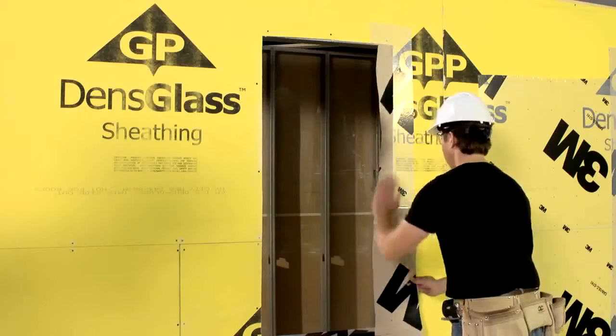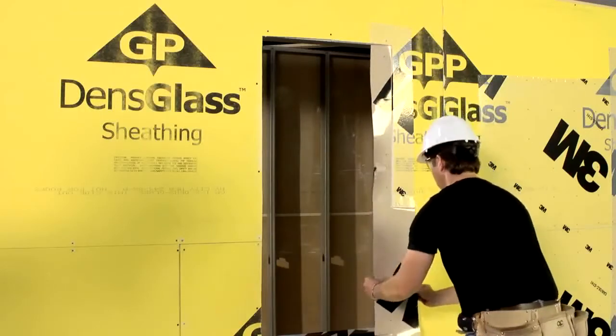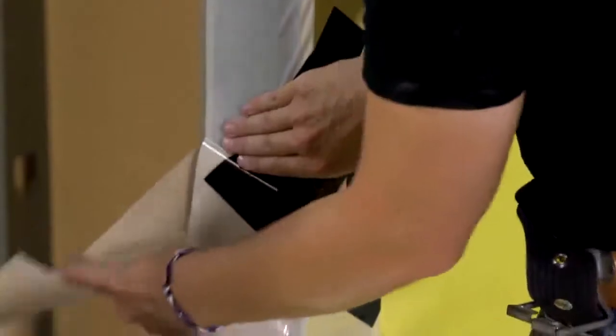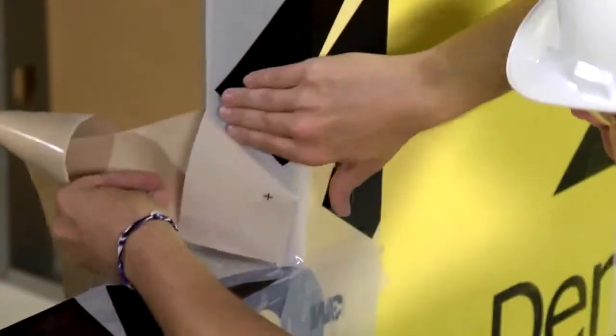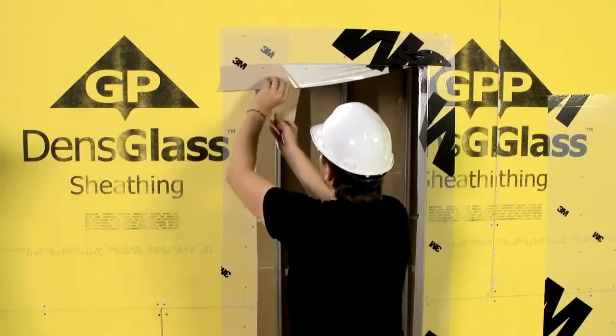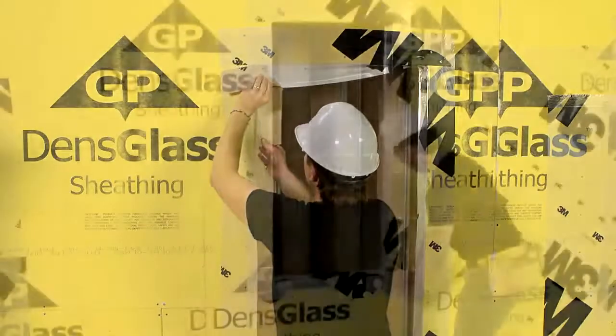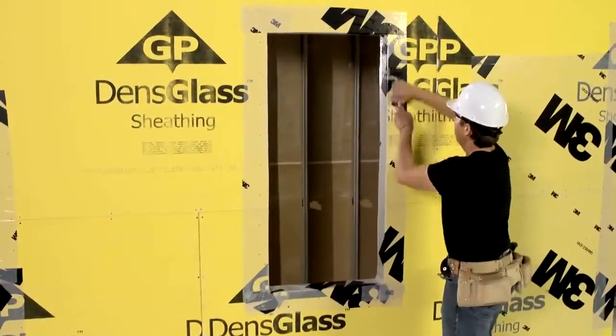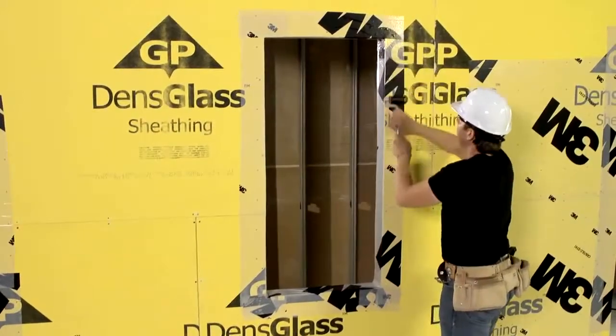Cut and apply membrane for the jams and header with the same procedure as the sill. Start with the jams, lapping the membrane shingle fashion over the sill wrap. Finish with the header strip, lapping over the jam strips. With a J-roller, burnish the membrane in all laps to optimize sealing.